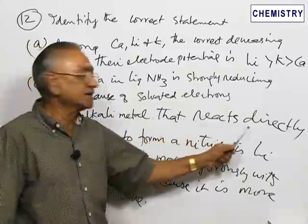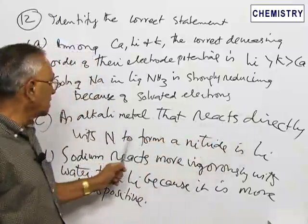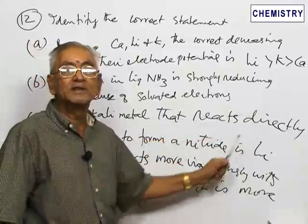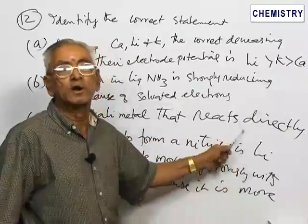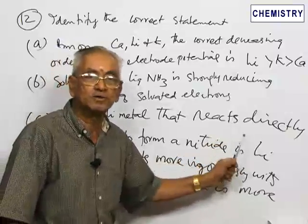An alkali metal that reacts directly with nitrogen to form a nitride is lithium. Lithium forms a nitride. Lithium reacts with nitrogen to form lithium nitride. That is also correct.